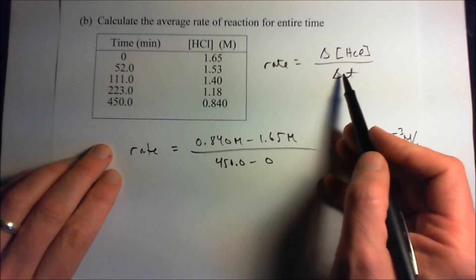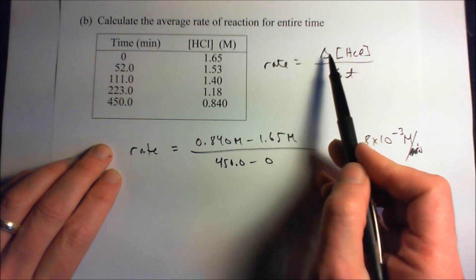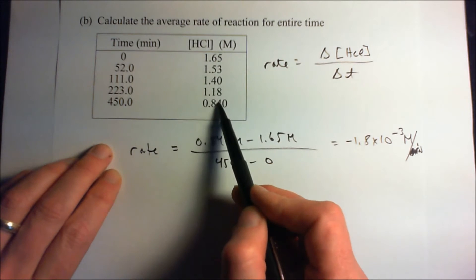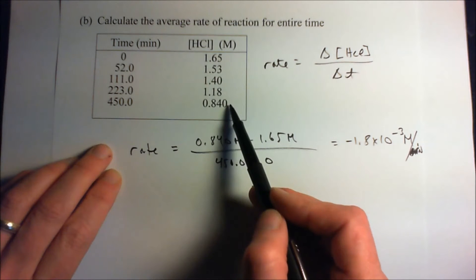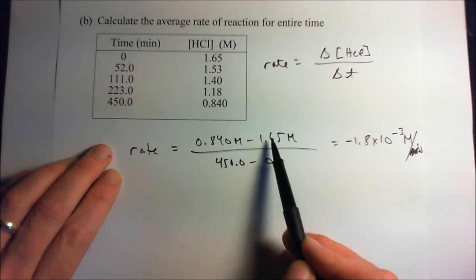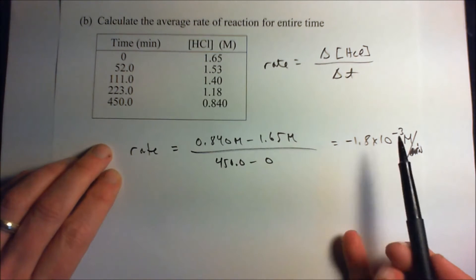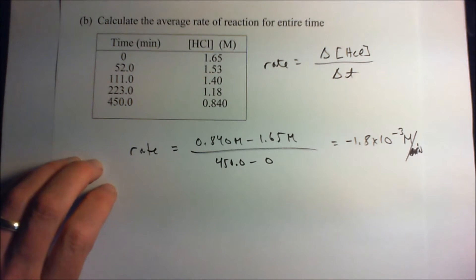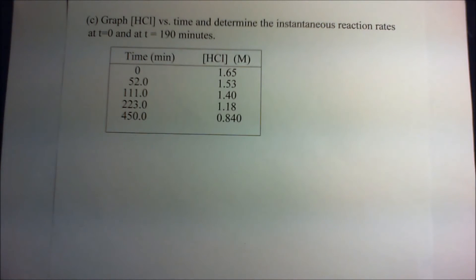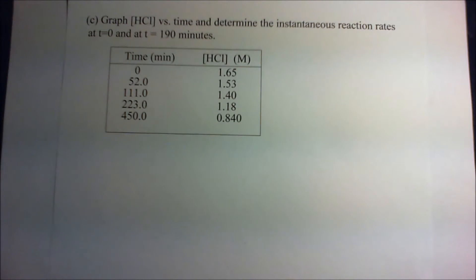Just keep in mind you've got to take it over the period in question — from 0 to 450, 1.65 to 0.840, giving minus 1.8 times 10 to the minus third. Finally, we're going to take this data and make a graph. We want to graph hydrochloric acid concentration versus time and determine the instantaneous reaction rate at T equals 0 and T equals 190 minutes.